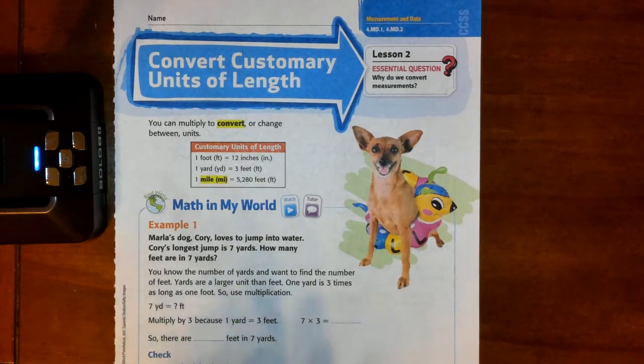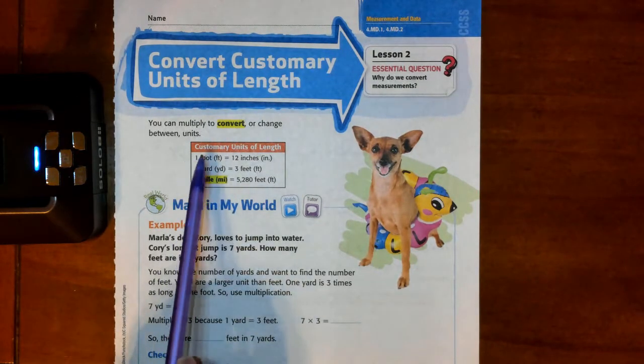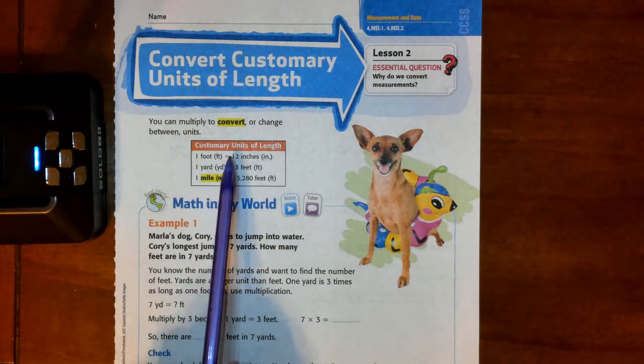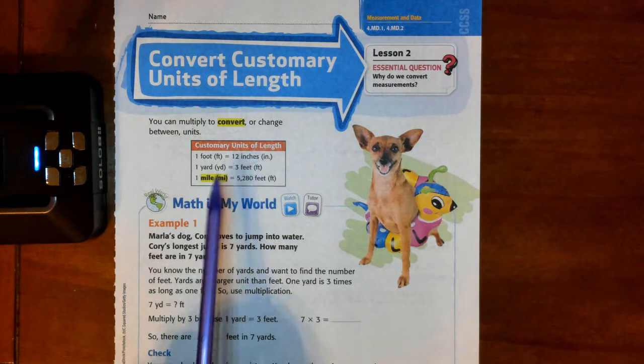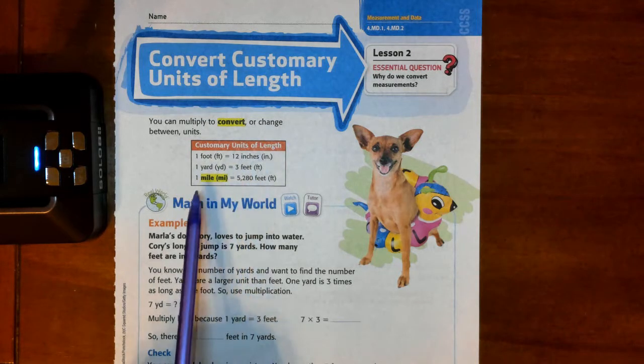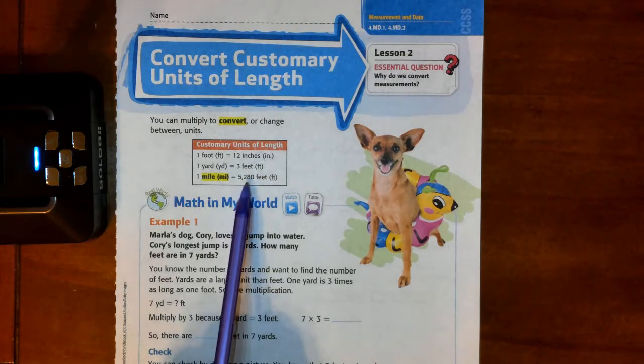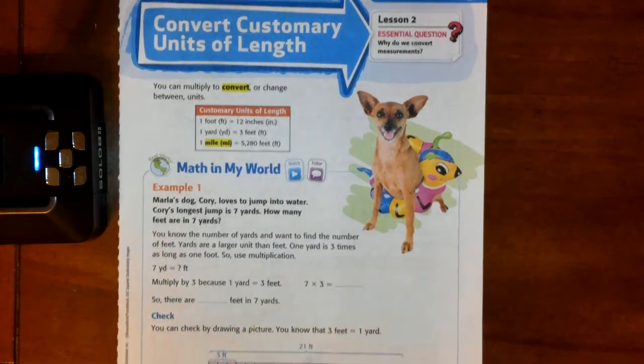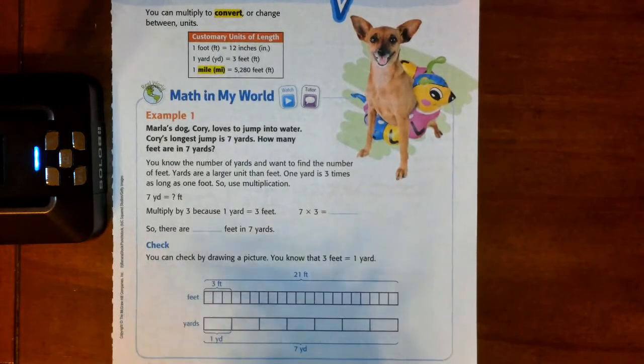You need to make sure that you tab this page because you're going to need this little chart right here. 1 foot is the same as 12 inches, 1 yard is equal to 3 feet, and 1 mile is equal to 5,280 feet. So make sure you get a post-it so that you can tab this page.